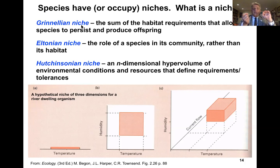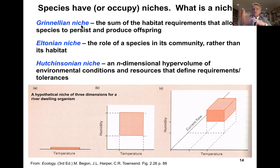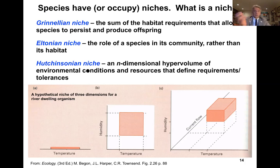The Hutchinsonian niche is an n-th dimensional niche hypervolume of the environmental conditions and resources that define the requirements or tolerances of a species. Imagine a freshwater fish not found everywhere in a riverine habitat. We can measure depth, temperature, flow rate, and substrate, and see where the species actually occurs within those environmental variables — that produces the hypervolume of environmental conditions and resources, including diet, that defines the requirements and tolerances for that species.